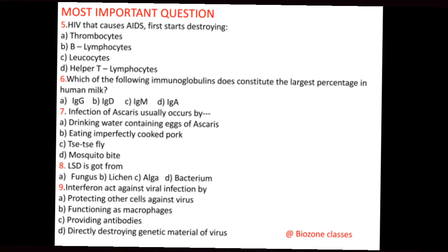Question number 9: Interferon acts against viral infections by — A. Protecting other cells against virus, B. Functioning as a macrophage, C. Providing antibodies, D. Directly destroying the genetic material of the virus. The correct answer for question 9 is A, protecting other cells against virus.